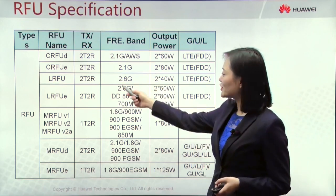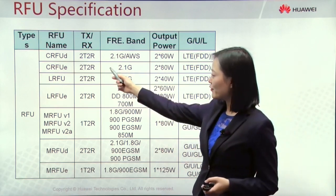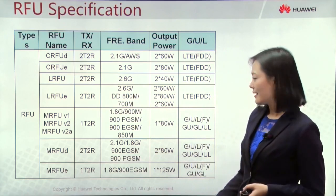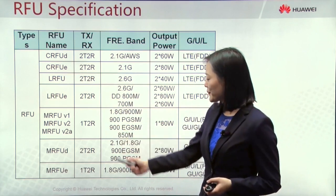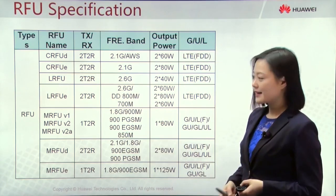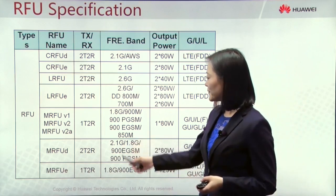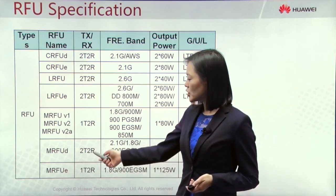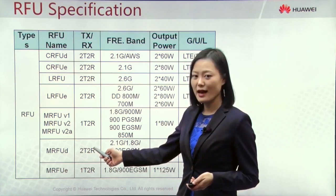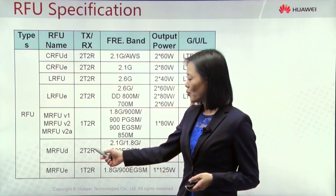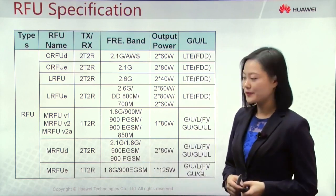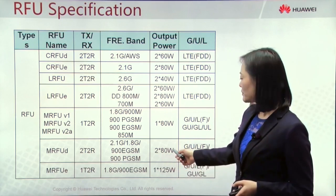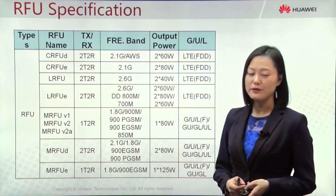This table lists different types of RFU. The top four types — CRFU and LRFU — only support LTE FDD single mode. The MRFU can support multi-mode. Looking at MRFU-D, it supports multi-mode and its antenna configuration is 2T2R, meaning it has two channels inside, each able to both receive and transmit signal. This RFU presents good output power performance, with each channel outputting 8W power.